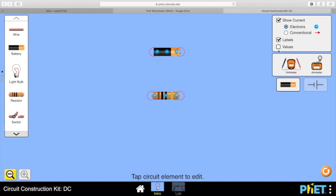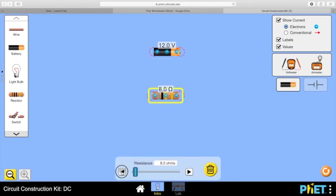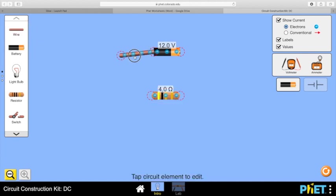This time, show values. I'm going to take a 12 volt battery and a 4 ohm resistor. I make that 4 ohms, join it up.